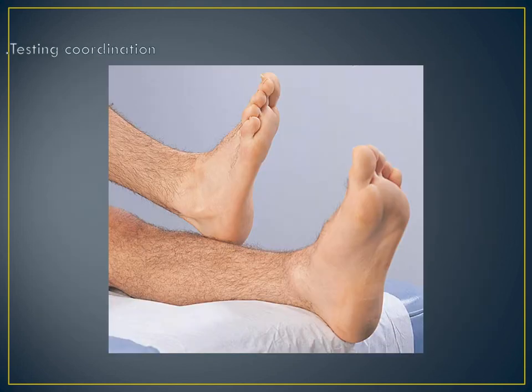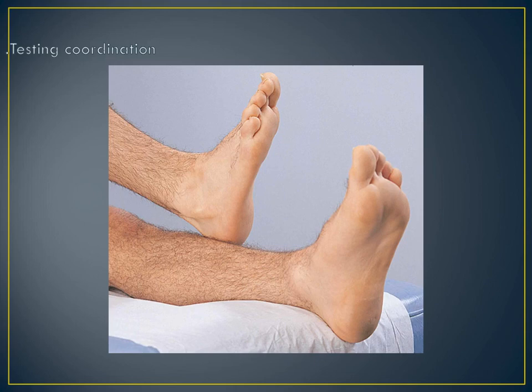One way to test coordination is to have them lie down or stand and take their heel and run it down their shin — this is testing muscular coordination. There are a lot of different ways to test muscular coordination. You can have them put their hands in a prone position and then have them quickly go prone, supinate, prone, supinate, prone, supinate — that tests muscle coordination also.